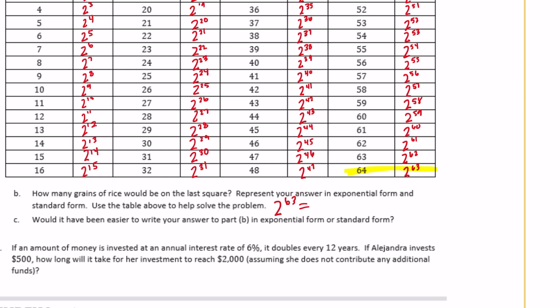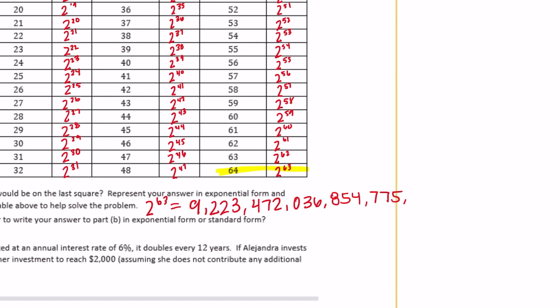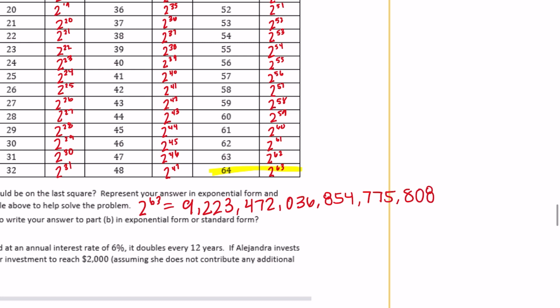If you calculate two to the 63rd power on your calculator, you get a really, really big number: nine quintillion, 223 quadrillion, 472 trillion, 36 billion, 854 million, 775 thousand, 808. That is a massive number, and if you don't know how to say that number, that is okay.